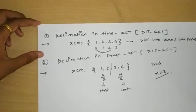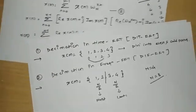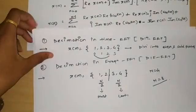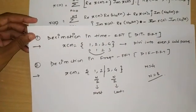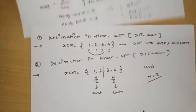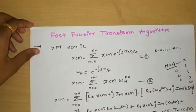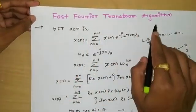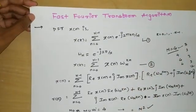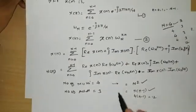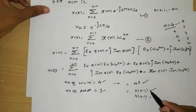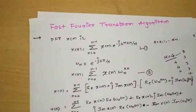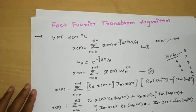Questions likely to appear include: define Fast Fourier Transform and explain its necessity, and discuss the efficiency of Fast Fourier Transform. For these, explain the necessity arising from direct computation complexity, determine the number of multiplications required, and show how symmetry and periodicity properties reduce multiplications from N² to (N/2)log₂N.